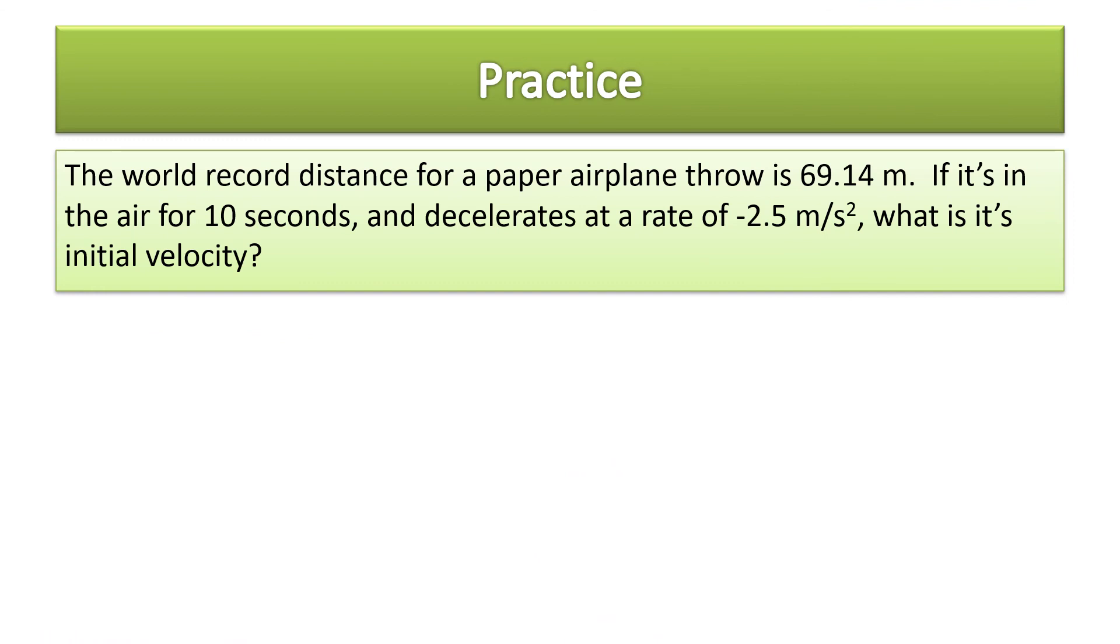So let's do the problem. The distance is 69.14 meters, it's in the air for 10 seconds, and it decelerates at a rate of negative 2.5 meters per second squared. What is its initial velocity? And again, I'm telling you the process works: look at your variables, identify which one isn't listed, find an equation that doesn't have vf in it. If you look at an equation and you see vf, cross it off. You're not going to use it.